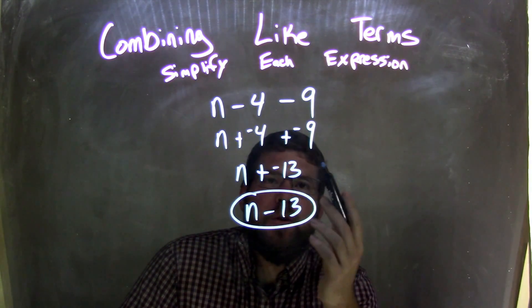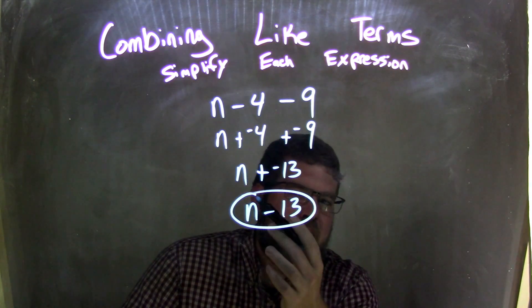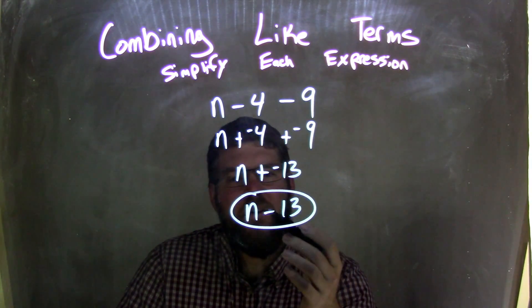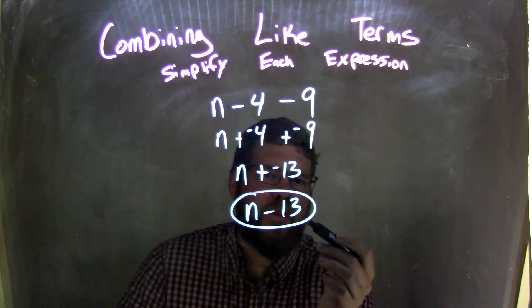Now we have negative 4 plus negative 9 is negative 13. The n comes out. And adding a negative is the same thing as subtraction. And so our final answer here is n minus 13.